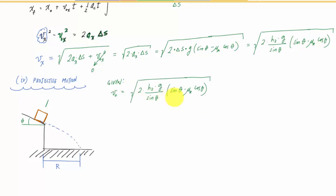I know this initial height H1 here, and I want to find R. I'm given the angle at which this velocity is happening. This particle is moving at velocity V0, and I know the angle theta at which it's leaving. So theta is also known in this case.